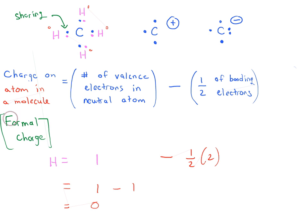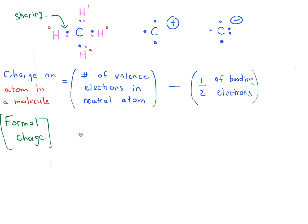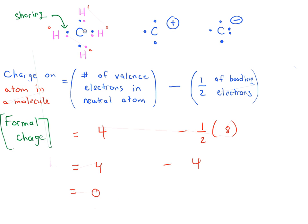Now for carbon in CH4: we add up all the bonding electrons — one, two, three, four, five, six, seven, eight — so we have one-half times eight. The valence electrons in neutral carbon is four, so: four minus one-half times eight = four minus four = zero. The formal charge on carbon in CH4 is also zero.